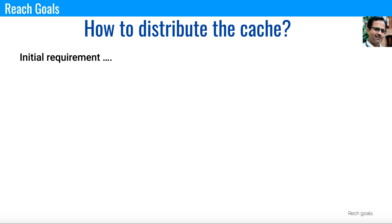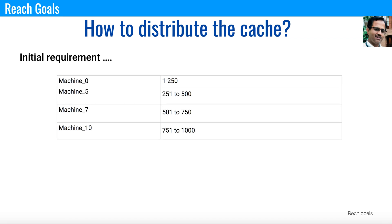Since it's a large file we cannot put it in one machine, so we are going to put it in four different machines. Machine 0 will have the records from 1 to 250 million, Machine 5 will have the records from 251 million to 500 million, Machine 7 will have 501 to 750 million, and Machine 10 will have 751 to 1 billion records.